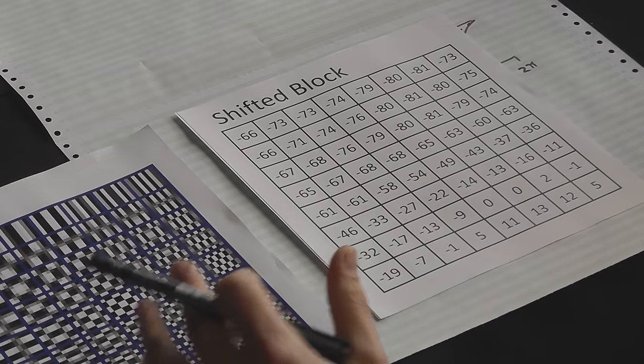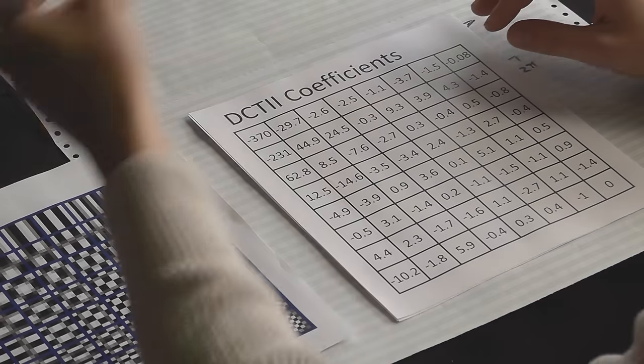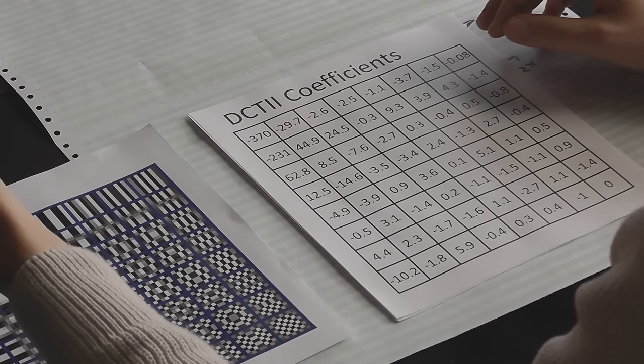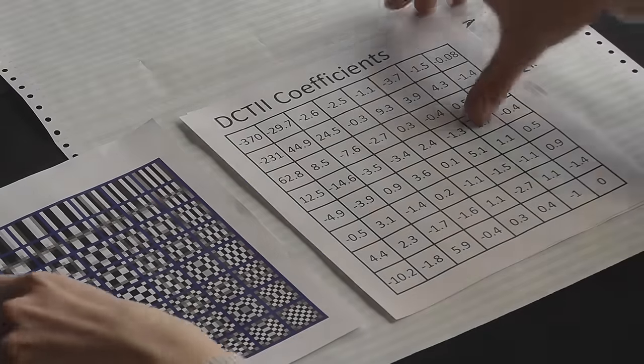So we calculate our DCT2 coefficients, and that gives us some slightly arbitrary values between minus 1024 and plus 1024. But that's not too much of a big problem. And what we have, each of these represents the weight, or the amount, of each of our cosine waves.